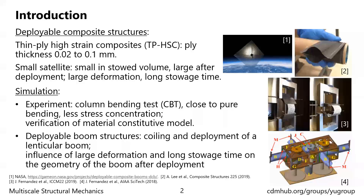The deployable composite structures considered in this study use thin-ply and high-strength composites, or TPHSC. The ply thickness of these composites is much smaller than conventional composites, and their laminates only have a few plies. These deployable structures are widely used on small satellites, as they can be packed into a small volume during storage and deployed into a large shape. But this also means the structure needs to go through large deformation, and long storage time can also introduce time-dependent behavior.